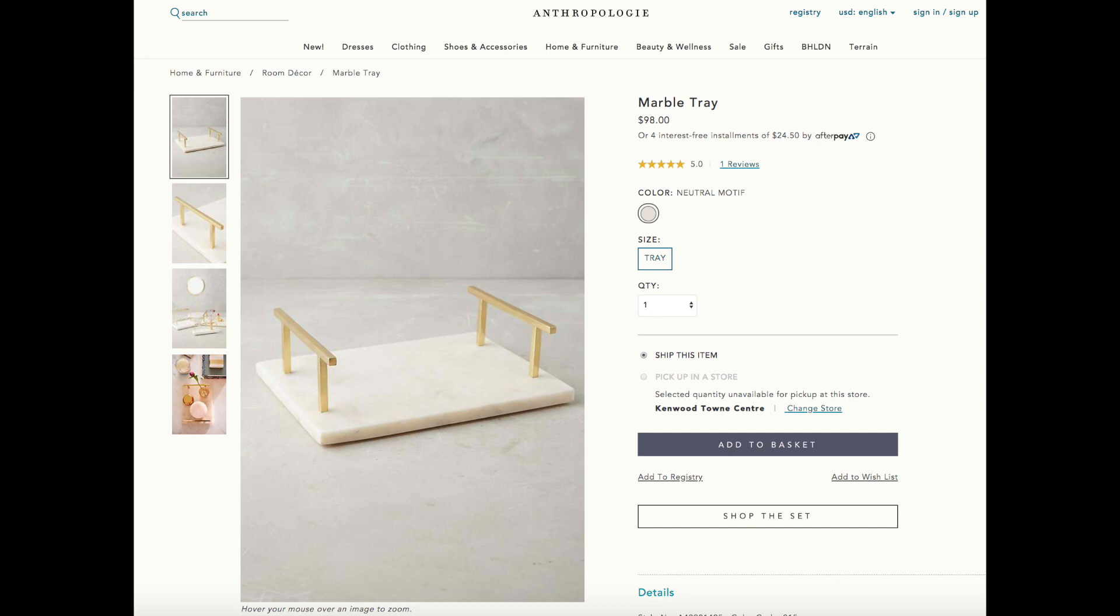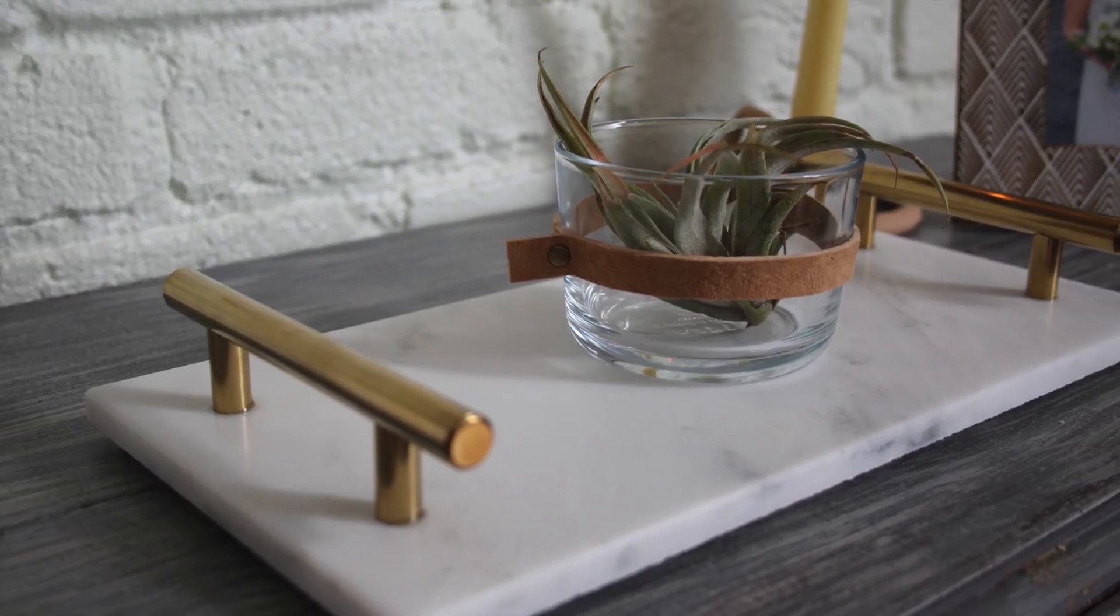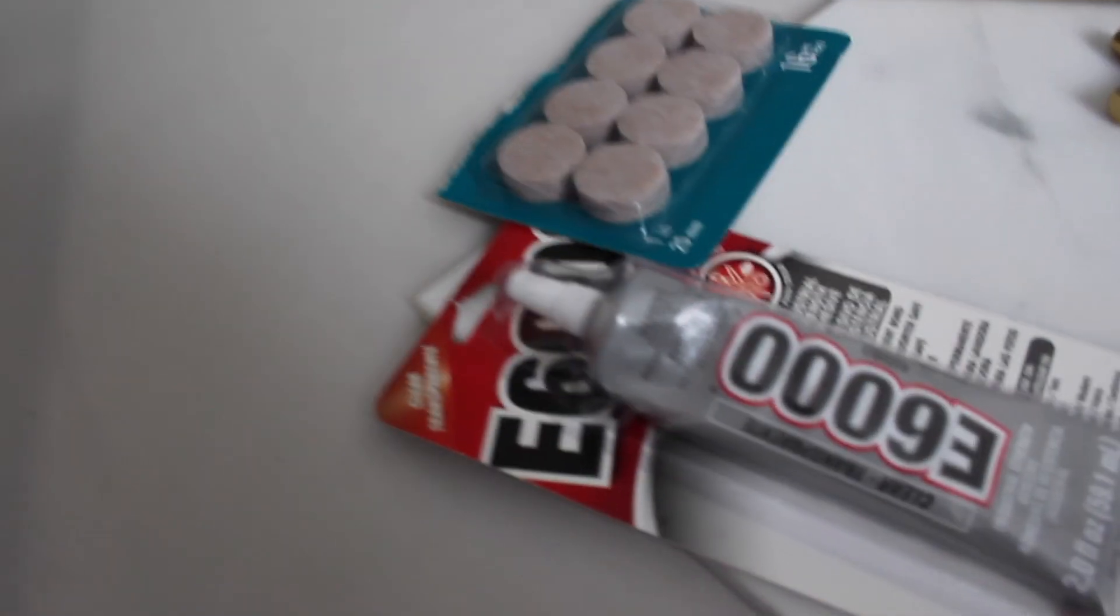This is what the first piece looks like—it's a marble tray from Anthropology and it is $98. I think that's pretty insane, but you'll see how we can easily recreate this tray and it looks exactly like it.